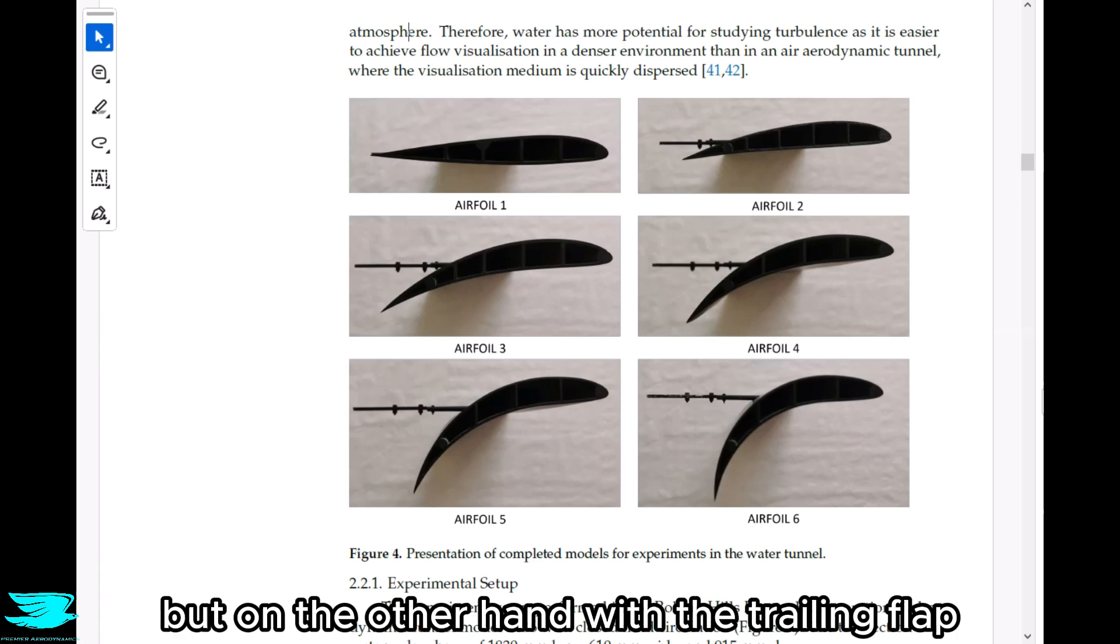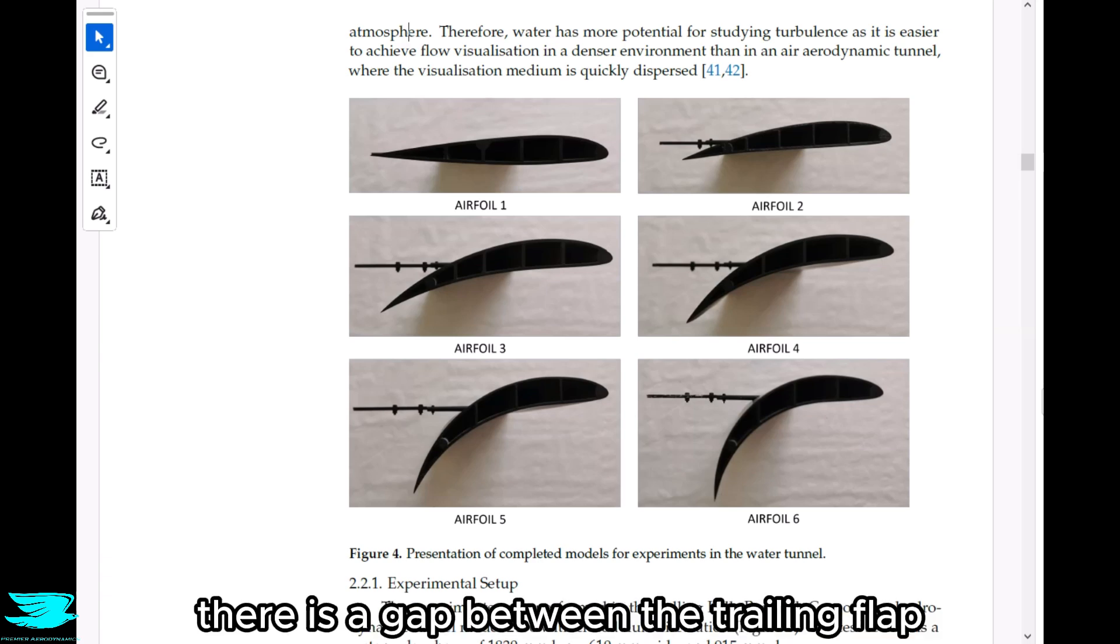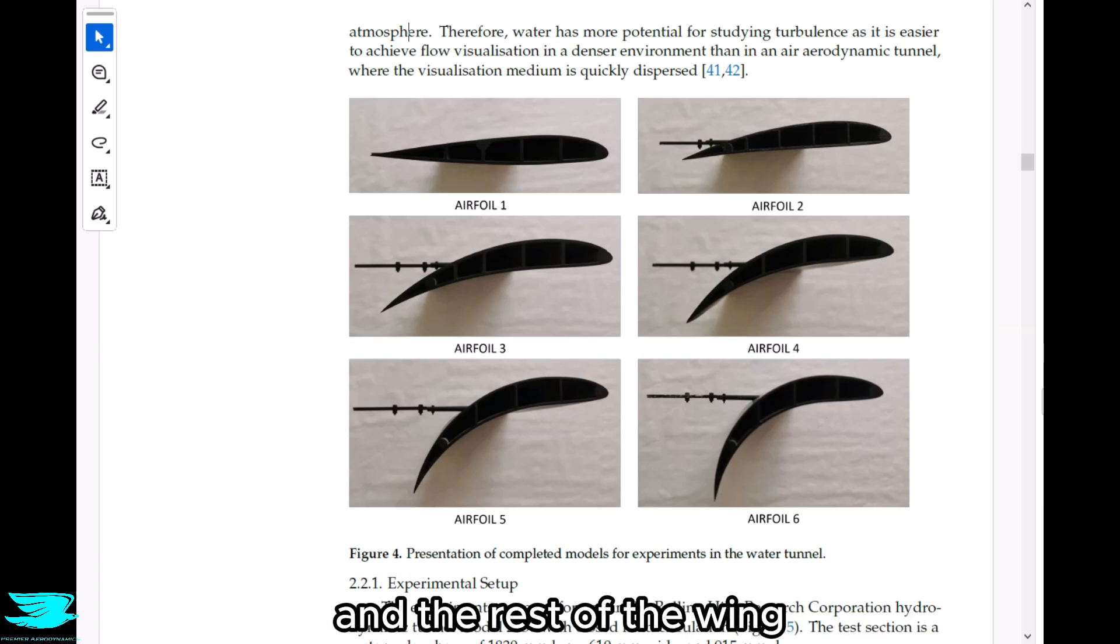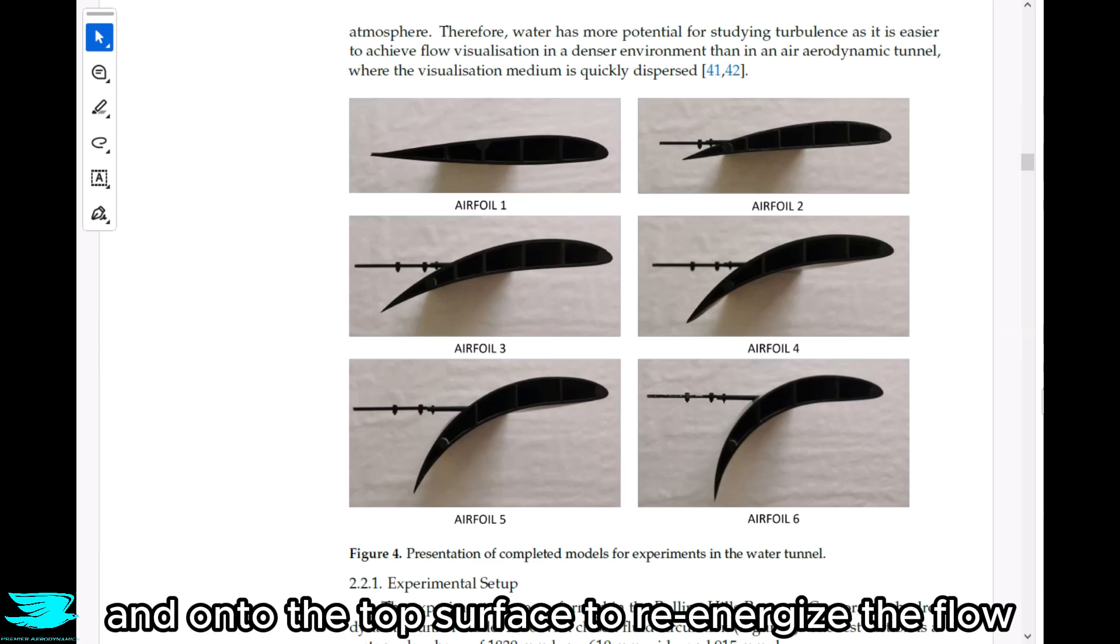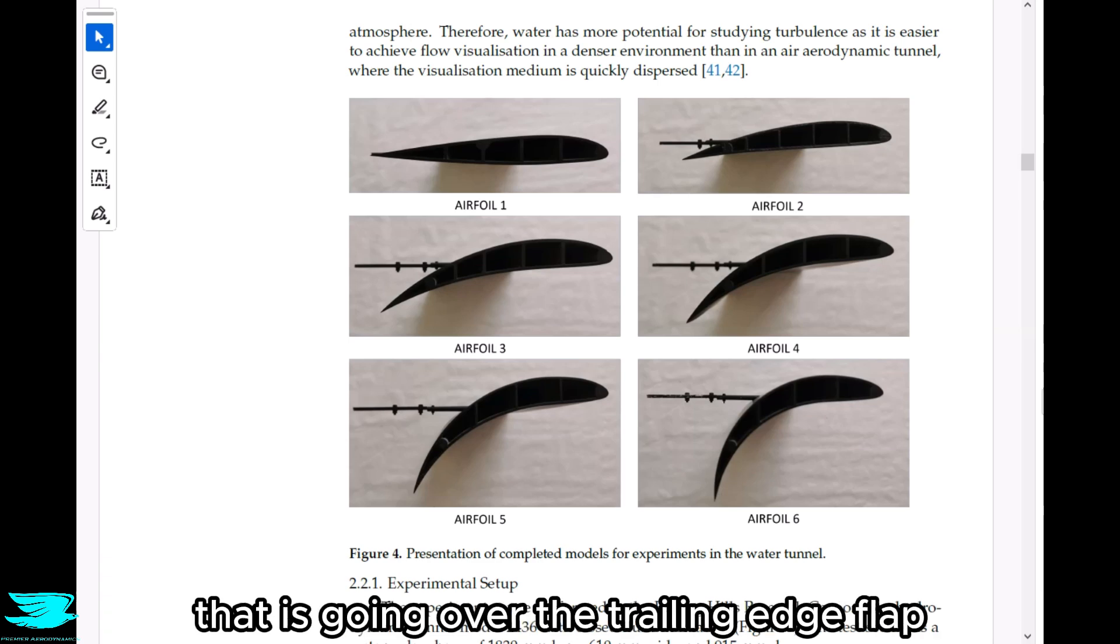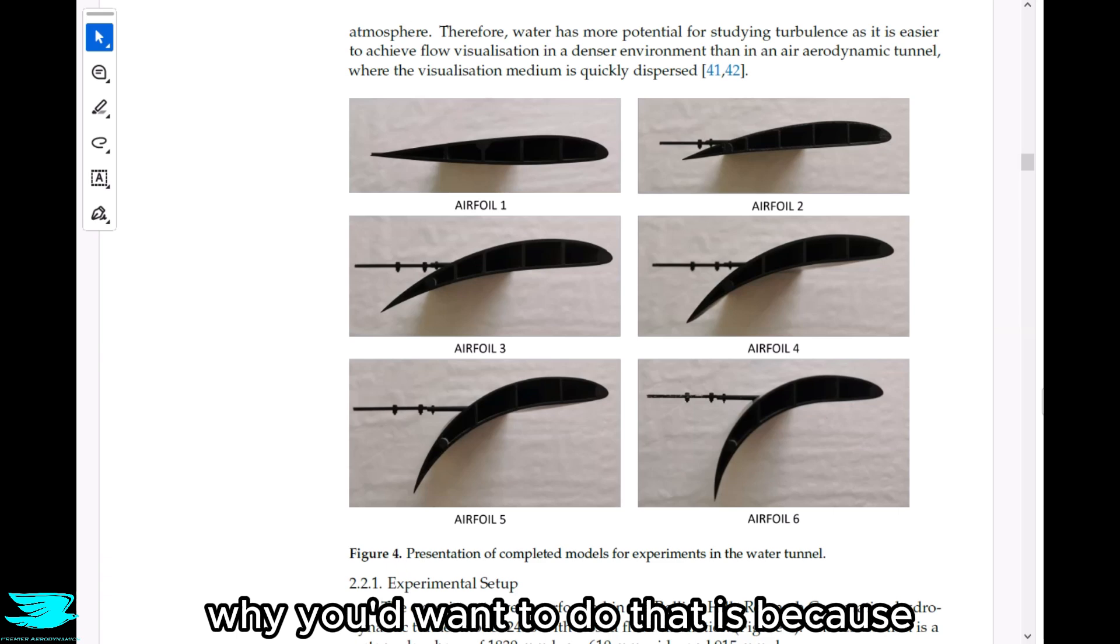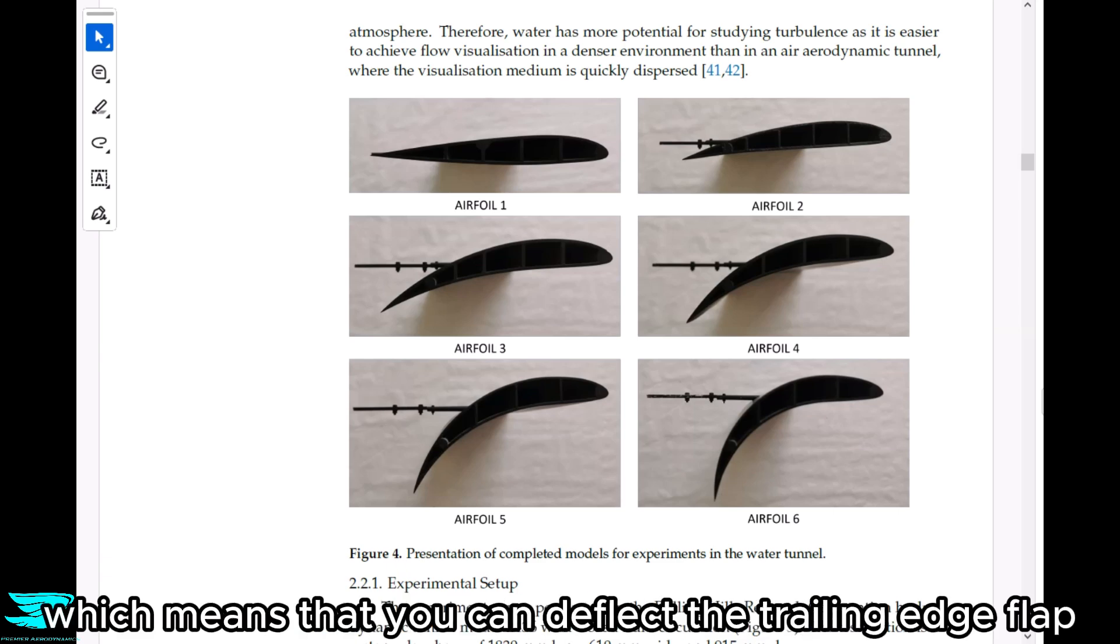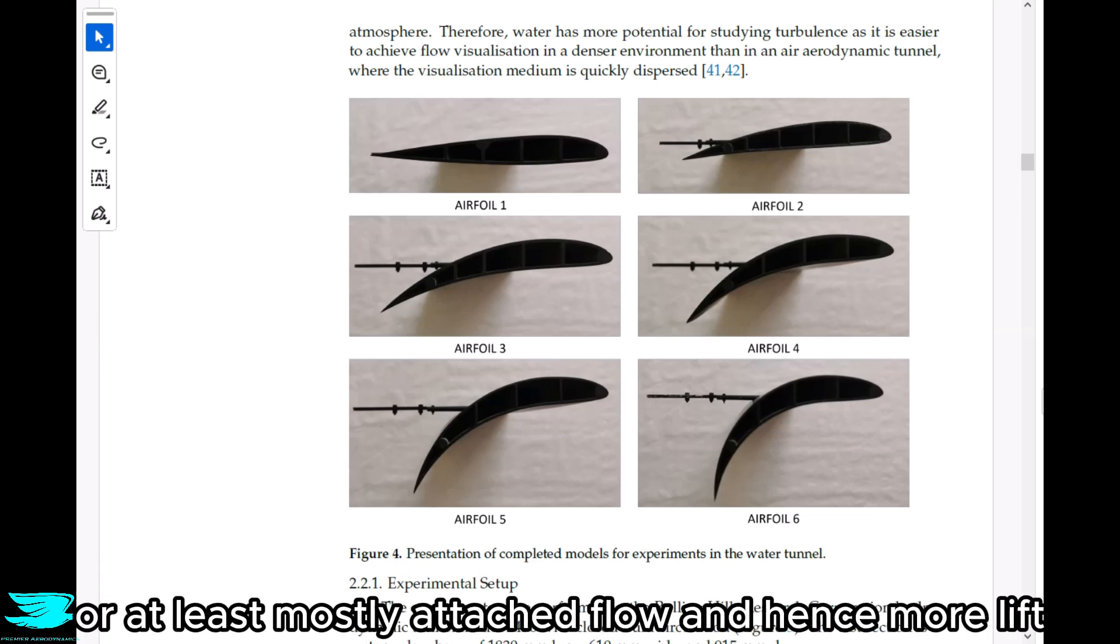But on the other hand, with the trailing flap, you can incorporate a slot, where effectively there is a gap between the trailing flap and the rest of the wing. That then allows higher momentum fluid to rush in and onto the top surface to re-energize the flow that is going over the trailing edge flap. Why you'd want to do that is because it will help the flow stay attached, which means that you can deflect the trailing edge flap even more and still maintain attached flow and hence more lift.